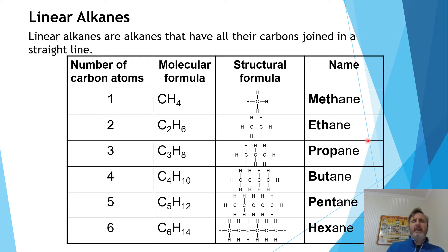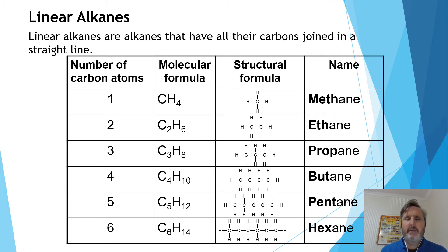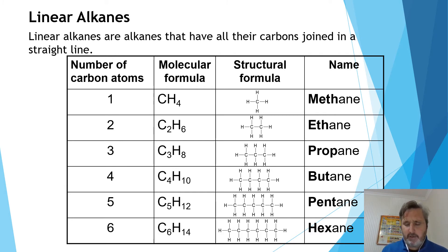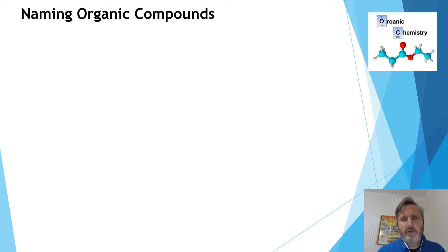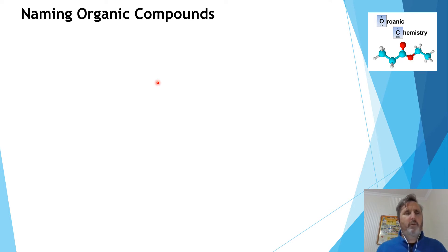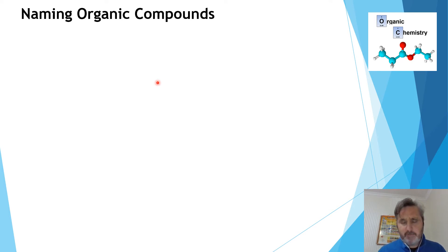The next step we're going to cover is the method to work out the names when someone gives us a more complex organic compound. Specifically here, we're only going to look at alkanes.